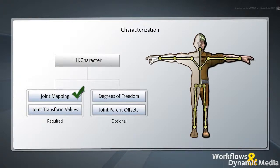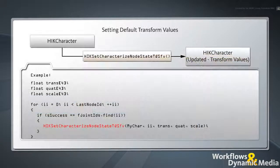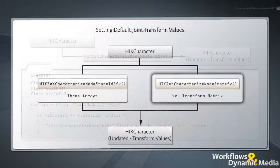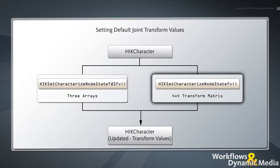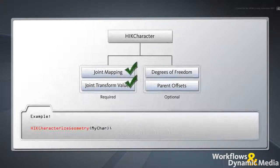We now have an HIKCharacter object containing all the HumanIK nodes that we'll use to control our character. However, we still need to set Translation, Rotation, and Scale values for each of these joints in order to match the required T-stance. To set default transform values, call the HIKSetCharacterizeNodeState function for each character node. This function requires three separate arrays of four floating-point numbers as arguments, representing the translation, quaternion rotation, and scale values of the current node in global space. Alternatively, you can call the HIKSetCharacterizeNodeState function that uses a 4x4 transform matrix instead of arrays. Finally, call the HIKCharacterizeGeometry function to complete the characterization.